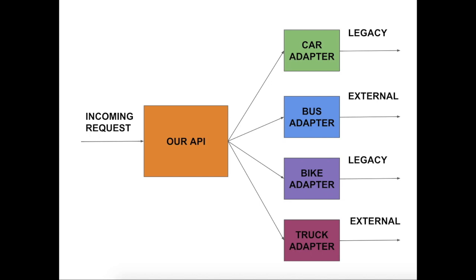In the normal case, how would you make sure that the incoming request goes to the right adapter? Obviously you'd use if-else. But what if there is a better way — and without adding the dependency of each adapter in the controller? Let's jump to our IDE.